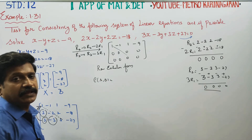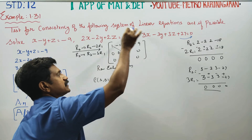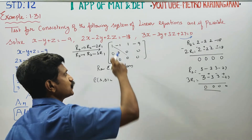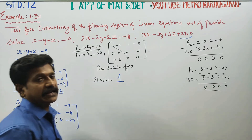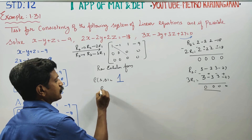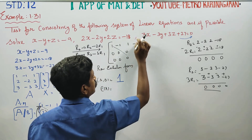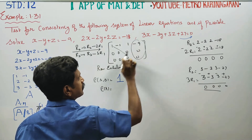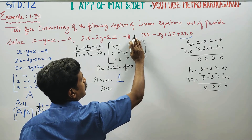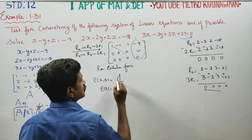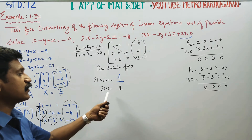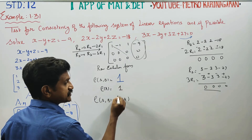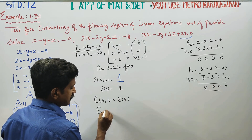From the principal diagonal, rank of A equals 1, and rank of A|B (the augmented matrix, which is a 3 by 4 matrix) also equals 1, since there is only one non-zero row. Therefore rank of A equals rank of A|B equals 1.